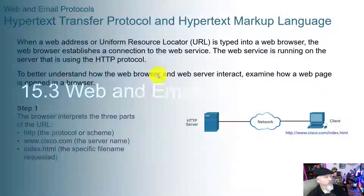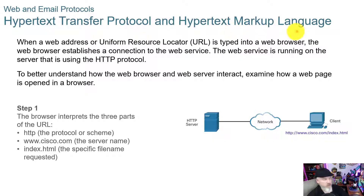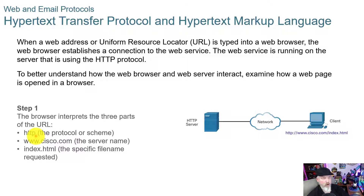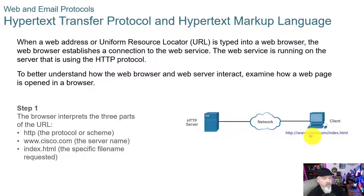When a web address or URL is typed into a browser, the web browser establishes a connection to the web service running on the server using the HTTP protocol. The browser interprets the three parts of the URL: first, the protocol — HTTP — though most browsers today will convert that for you; then the server name such as www.cisco.com; and then the specific file name, in this case index.html. In most cases you don't have to enter index.html — the server will serve up the default page, which is index.html.